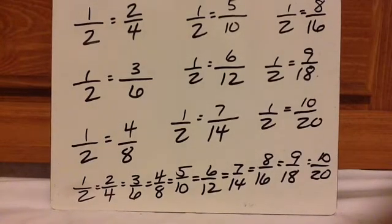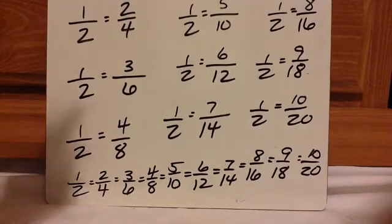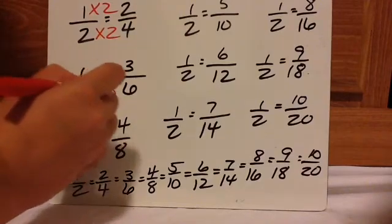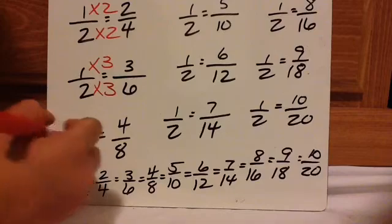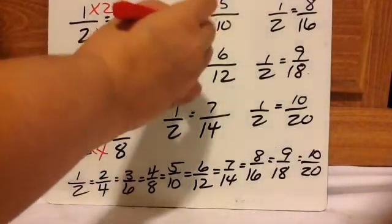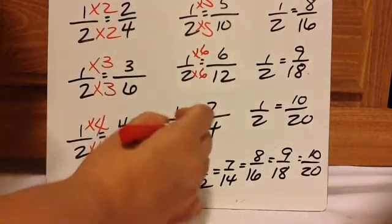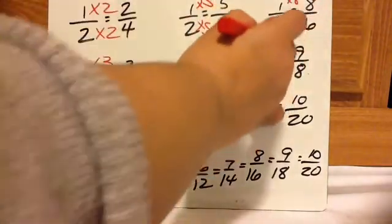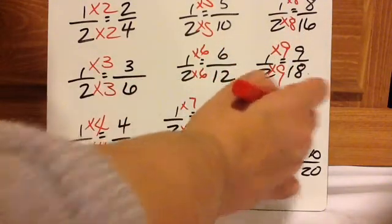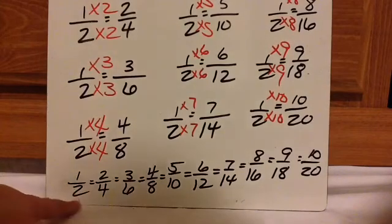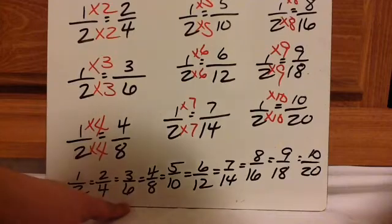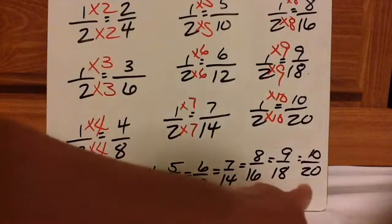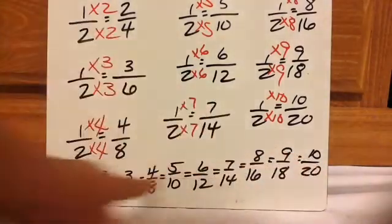One-half equals two-fourths because two times two is four and one times two is two. One-half equals three-sixths because it's times three. One-half equals four-eighths because it's times four. You can even start from numerator down to denominator: times eight, times nine, times ten, and so on. So these are all equivalent to one-half. Therefore: one-half equals two-fourths, which also equals three-sixths, four-eighths, five-tenths, six-twelfths, seven-fourteenths, eight-sixteenths, nine-eighteenths, ten-twentieths. These are all equivalent to one-half, and they are also all equivalent to each other.